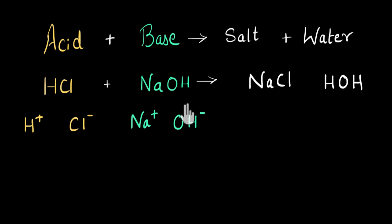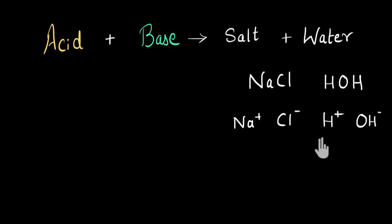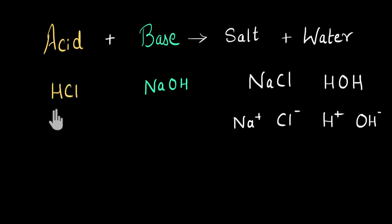So if the ions of acid and base exchange position, we get a salt and water. That means if we exchange the ions of salt and water, we can get back our acid and base. Let's try that. The ions in salt NaCl are Na⁺ and Cl⁻. Water (HOH) gives H⁺ and OH⁻. Now let's exchange — sodium gets attracted to OH⁻ and we get NaOH, which is a base because it has OH and increases OH⁻ concentration. H⁺ gets attracted to Cl⁻ and forms HCl, which is an acid. We have got our acid and base for the given salt NaCl.